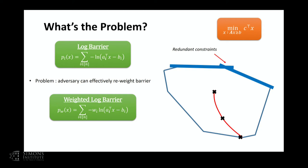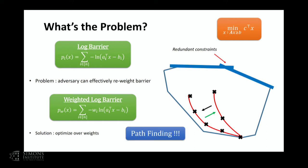There's something in the algorithm that depends on the particular representation of the polytope — the number of constraints n — rather than the dimension. To see this illustratively: suppose we took our linear program and repeated a few constraints many, many times. This doesn't change the optimization problem, but it does change the logarithmic barrier — by repeating a constraint, we're increasing the weight on that constraint. The adversary, through their choice of how the polytope representation is given, can effectively choose what weighted log barrier we're working with, with the number of constraints n measuring their control. Repeating constraints shifts the central path, potentially slowing convergence.